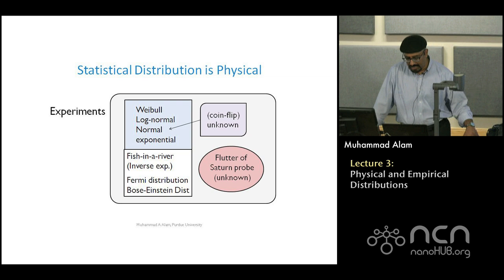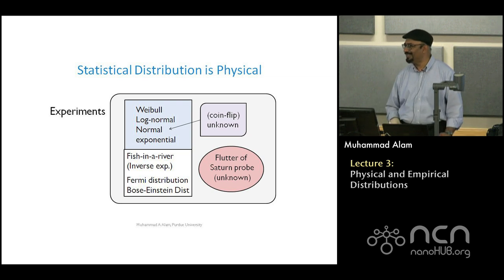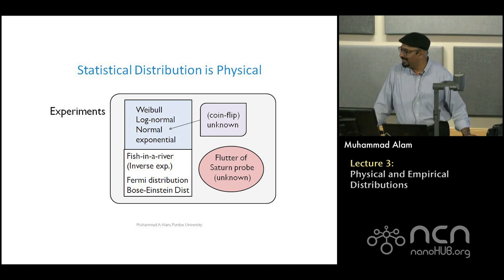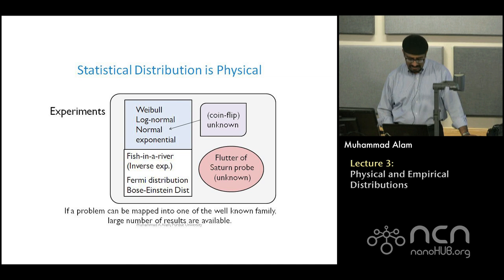I also describe what I call the fish-in-a-river distribution. This is a very strange distribution. We always think that a distribution has an average, but it turns out this distribution does not have any average. This shows that we have only learned a subclass of problems in our traditional classes.